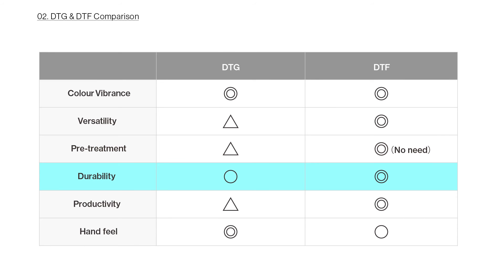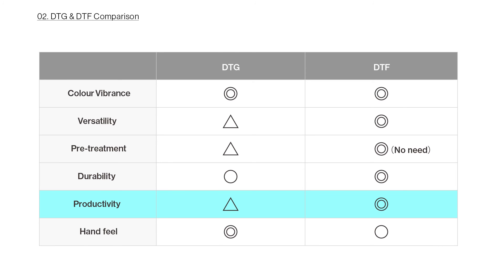Durability is where DTF pulls ahead. The heat-activated adhesive process used in DTF creates a more durable bond with the fabric, offering greater resistance to washing and wear. DTG prints, while detailed and soft, may degrade faster over time, especially on fibres that are less absorbent of water-based ink. For productivity, the pretreating and curing process in DTG makes it less ideal for large-scale production. DTG users must also be present throughout the entire process, leading to lower productivity. DTF with a smart powder-shaking machine with integrated cooling functions allows businesses to benefit from automation and obtain ready-to-press DTF transfers.